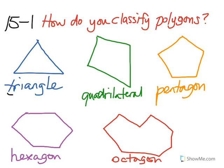A triangle has three sides because of tri. Quadrilateral, four-sided. Quad. Remember, quadrilateral is not just a square or rectangle, it's any four-sided polygon. Pentagon, five-sided. Hexagon, six-sided. And octagon, eight-sided.